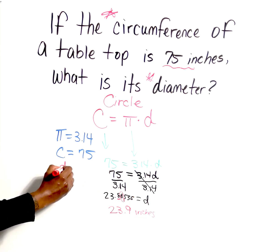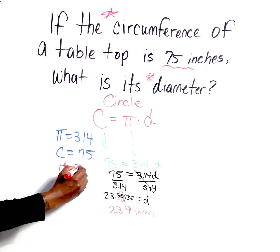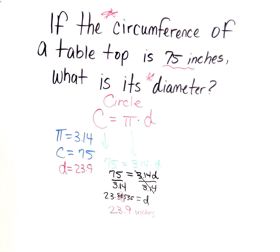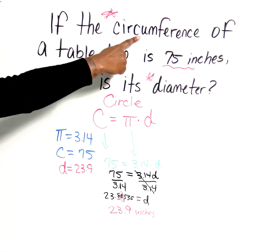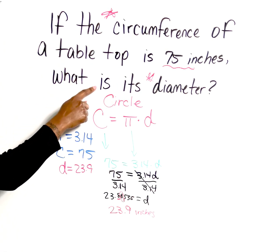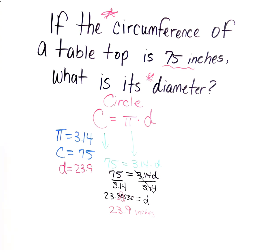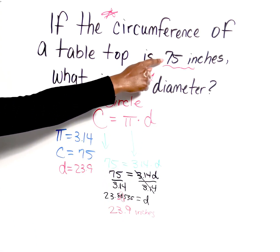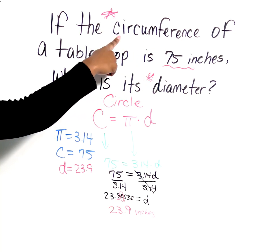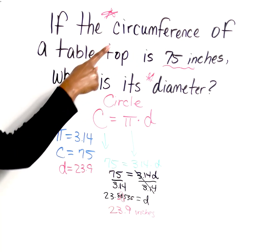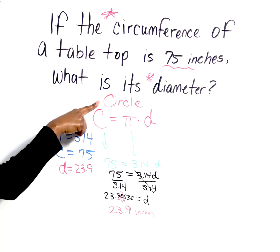So the diameter is going to equal 23.9. Let's take a look at our question again from the top: if the circumference of a tabletop is 75 inches, what is its diameter? What is our trigger? They give us some type of dimension—75 inches. What is that describing? The circumference, which lets me know I'm dealing with a circle.